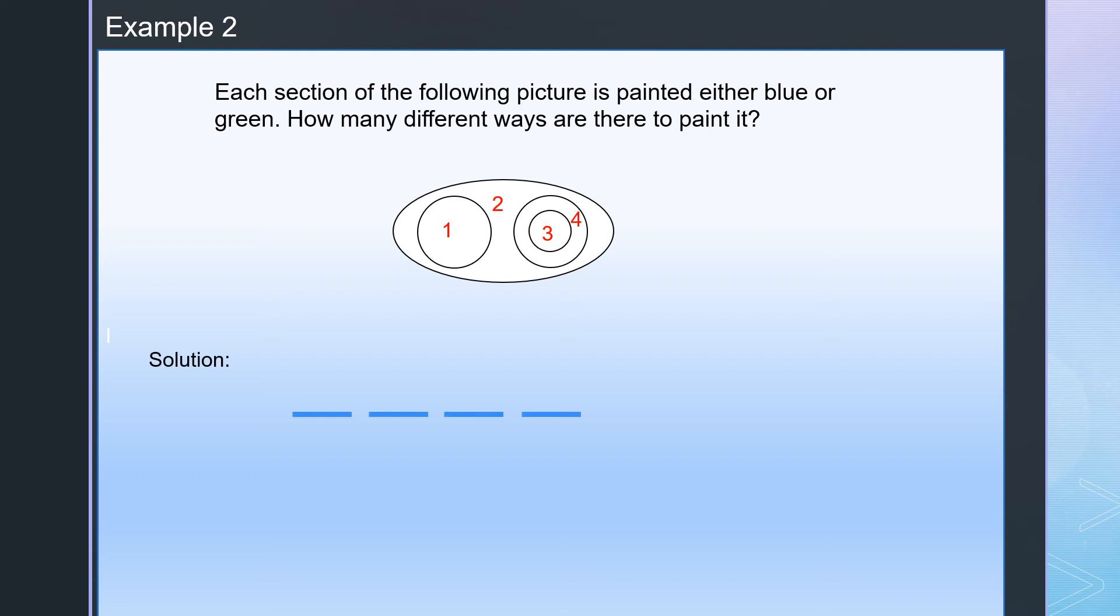So let's draw 4 lines. The first line represents the first region. We have 2 choices, either blue or green. For the second region, we have 2 ways to paint it as well. Blue or green. And these 2 choices will match the 2 choices in the first region. Then we can have 2 times 2. We have 4 ways to paint it.